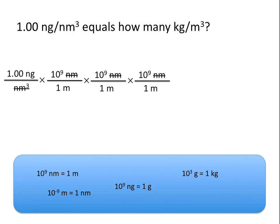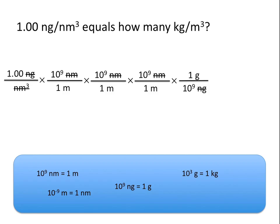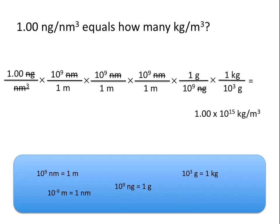Now we need to convert nanograms to kilograms. Because the prefix nano means the same thing regardless of whether it's in front of grams or meters, we can use a similar conversion factor: 10 to the ninth nanograms is equal to one gram. We write nanograms on the bottom to cancel, leaving grams per meter cubed. To convert to kilograms, we use 10 to the third grams per every one kilogram, putting grams on the bottom to cancel, with kilograms on top. This gives us a final answer in kilograms per meter cubed — 1 times 10 to the 15th kilograms per meter cubed.